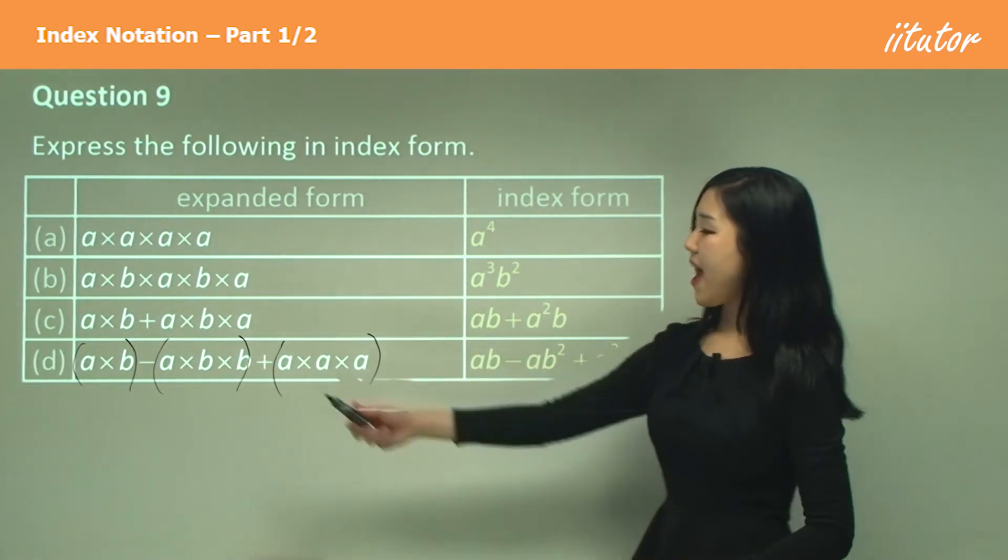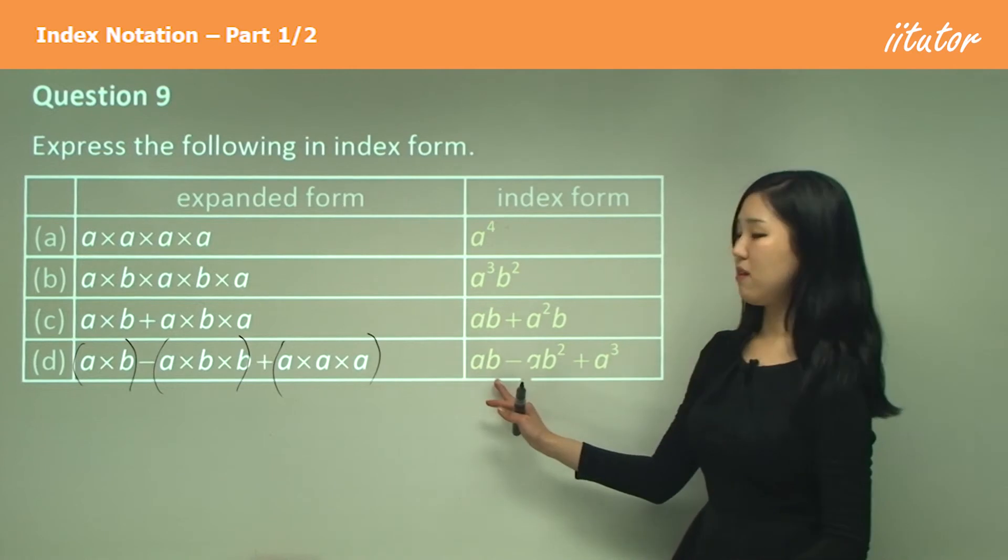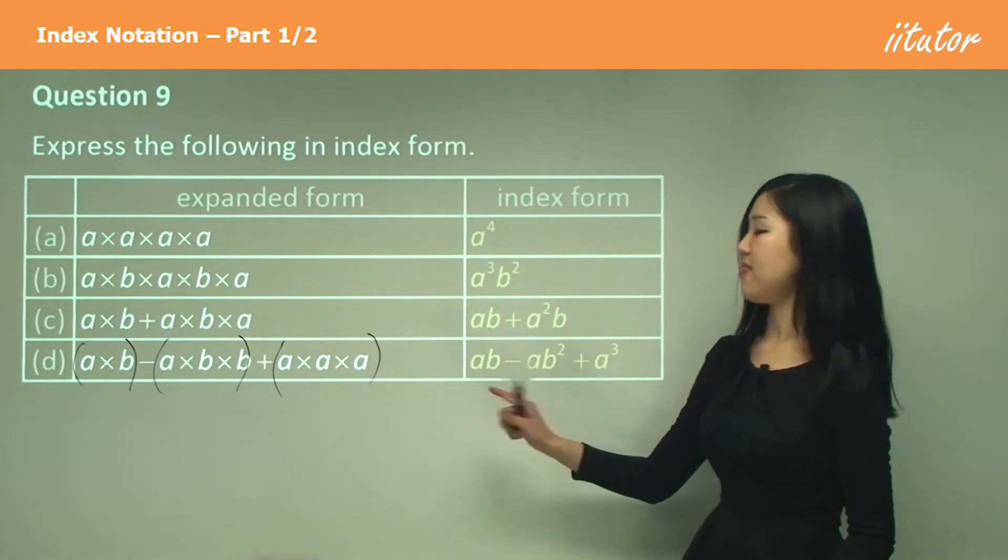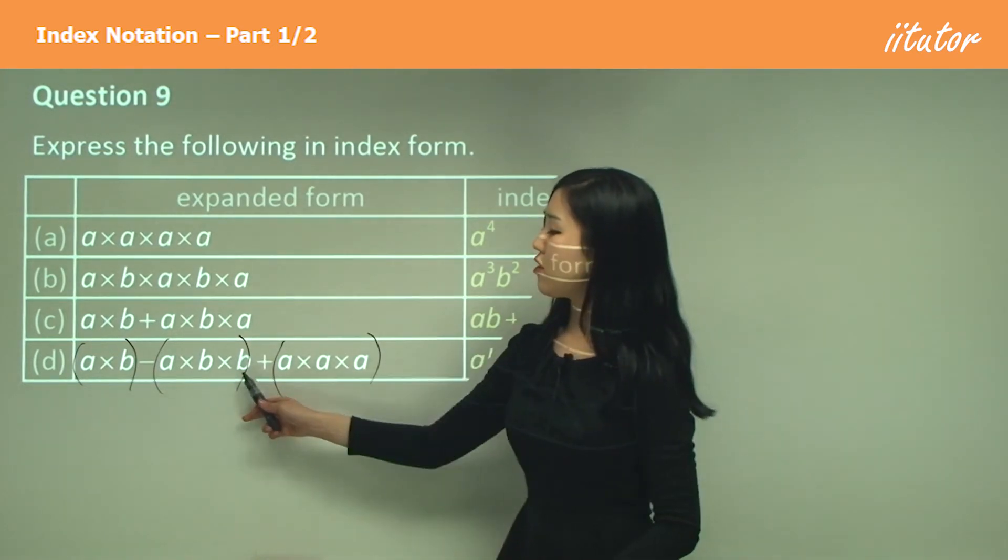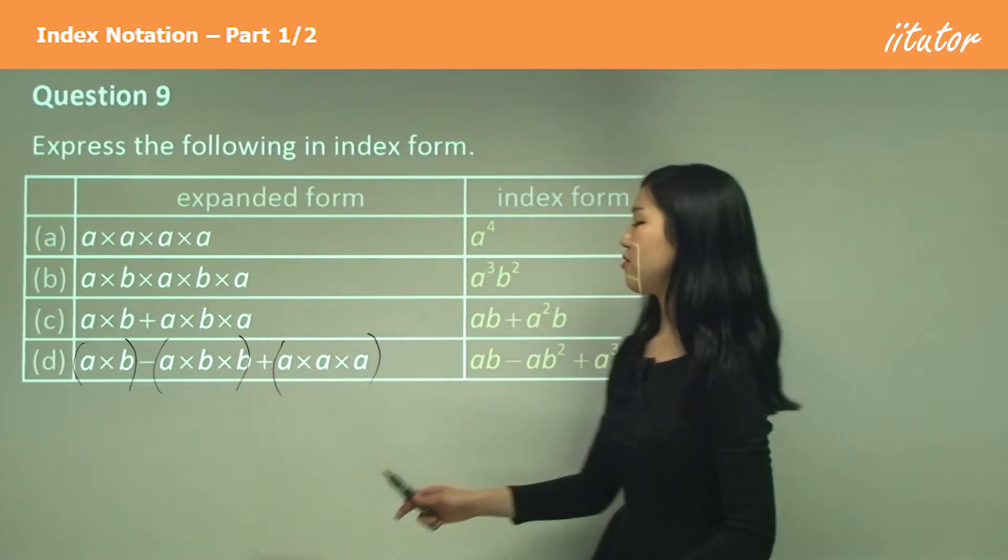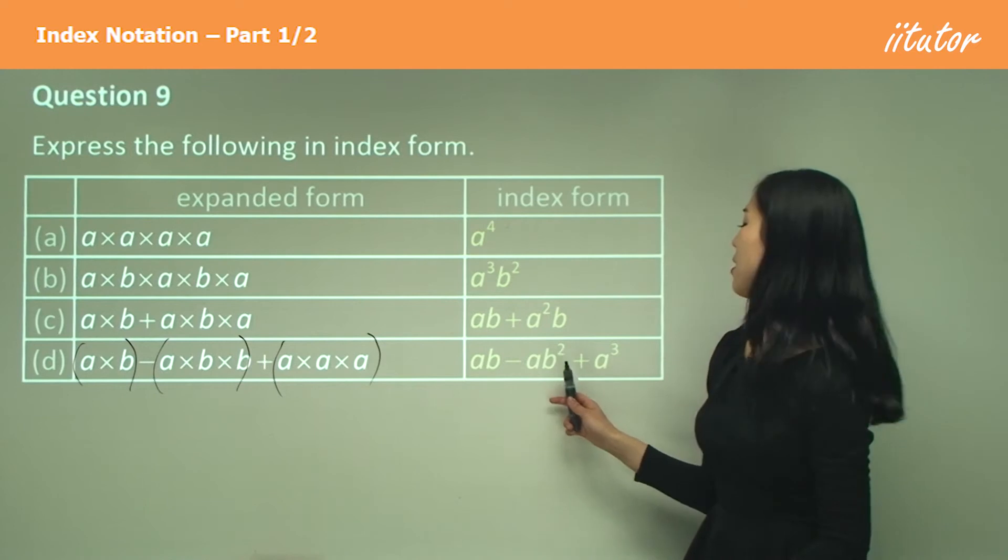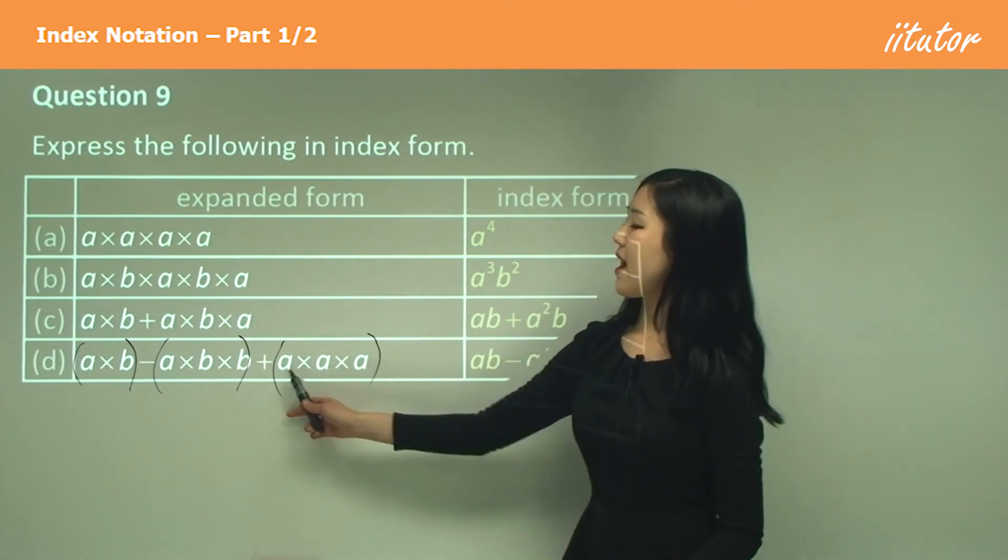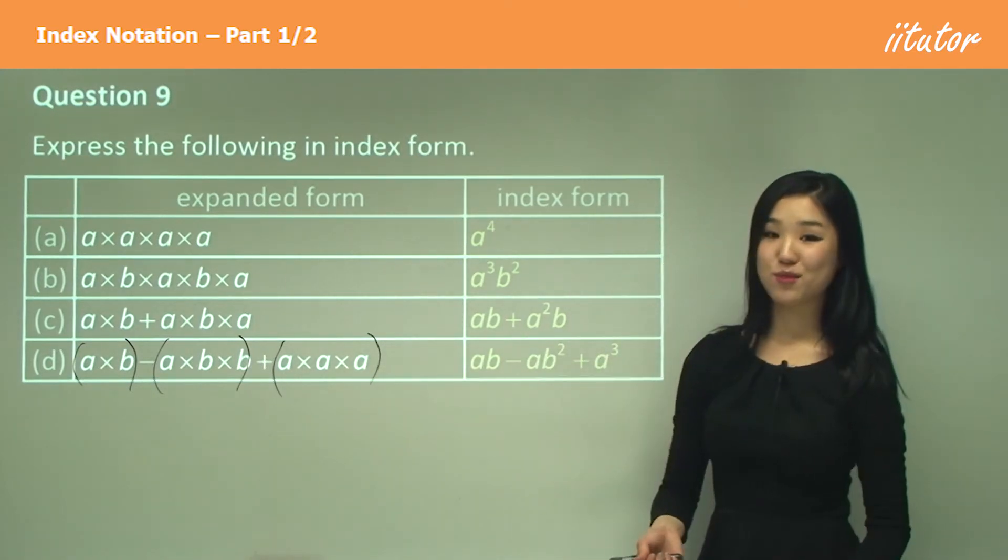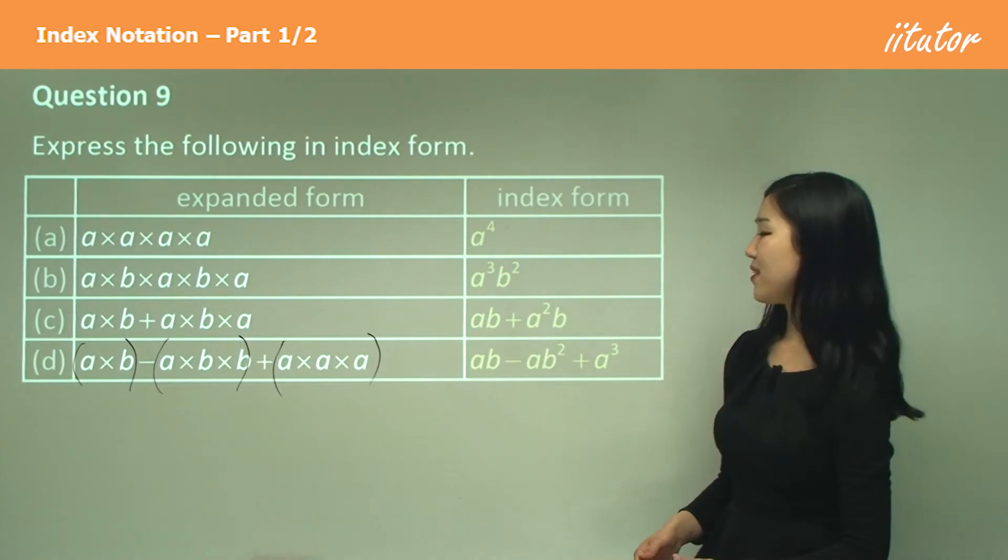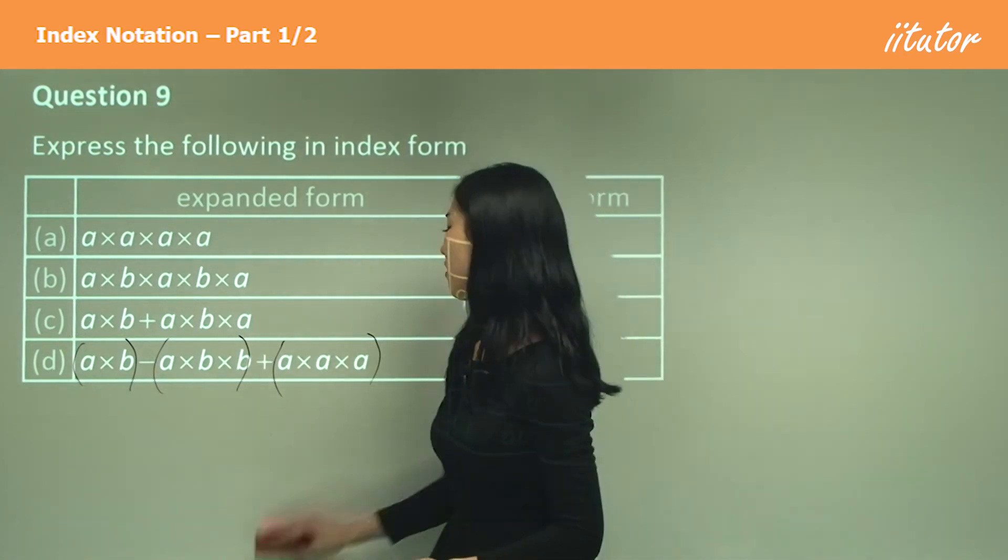This is what I've got. a times b is just ab. You don't have to put the multiplication sign there. And there's two lots of b's here and one a. So it's just going to be a times b squared or just ab squared. Plus there's three lots of a's. So a cubed. Or a to the power of three. That's what I have to do here. So it's very simple.